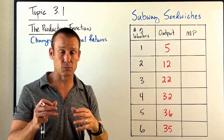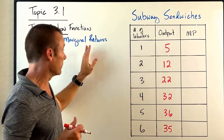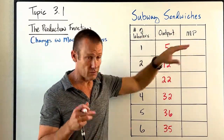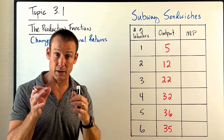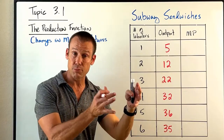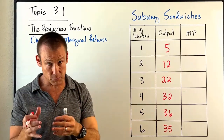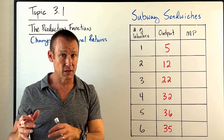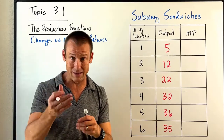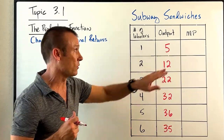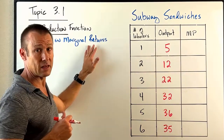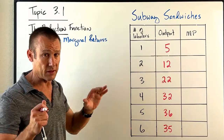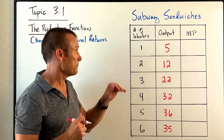Marginal product and marginal return are pretty much interchangeable. Marginal product is the change in output you get when you change a variable input by one, keeping all other inputs constant — the same thing as marginal returns.